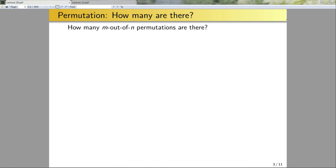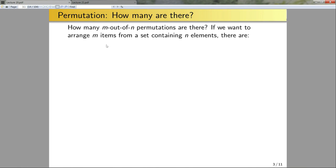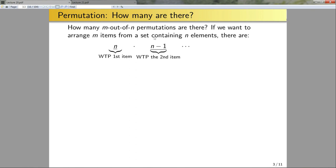How could I compute the number of these m-out-of-n permutations? If I want to arrange m items from a set containing n elements, there are n ways to pick the first item. Since I'm not replacing the elements of the set, I only have n−1 ways to pick the second item. This process continues until I pick the mth item, for which I'd have n−m+1 ways — or equivalently n−(m−1).